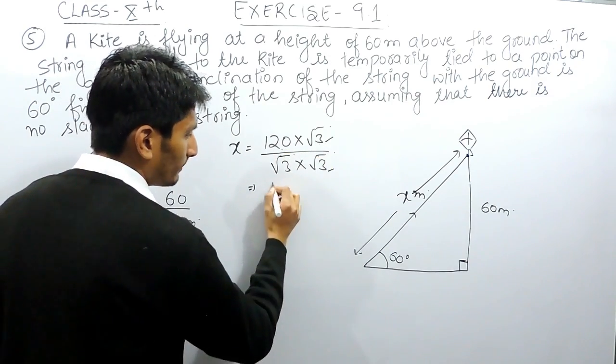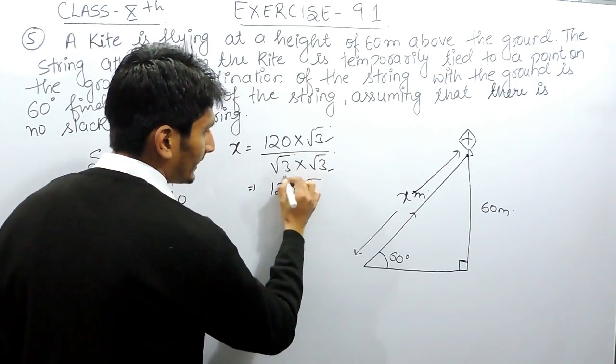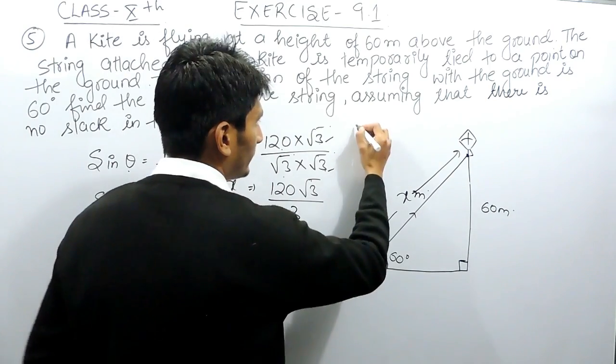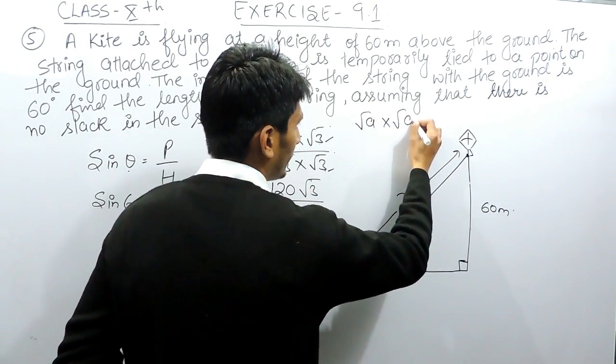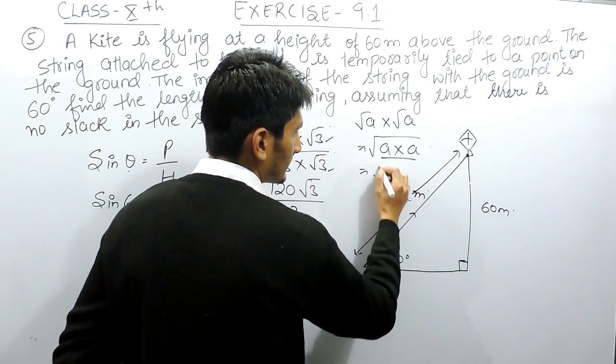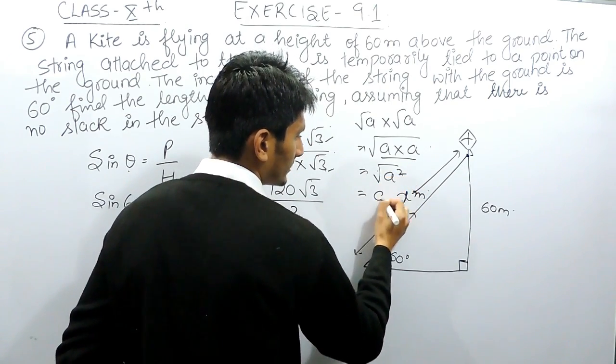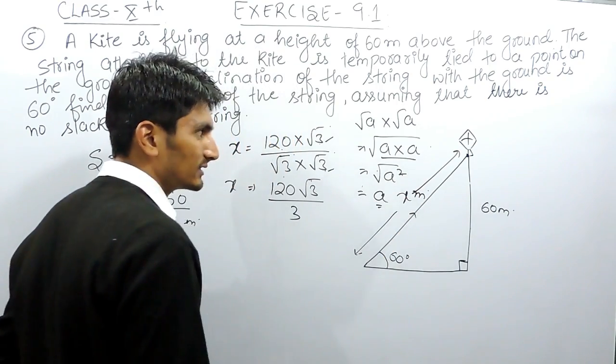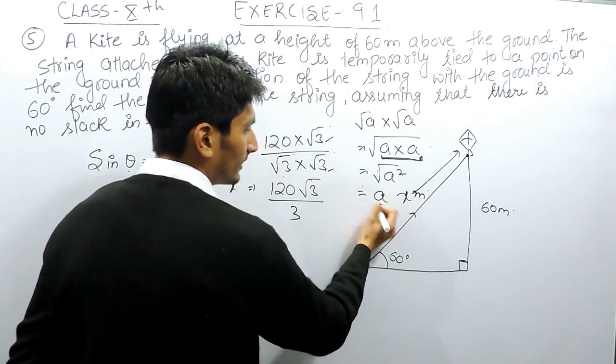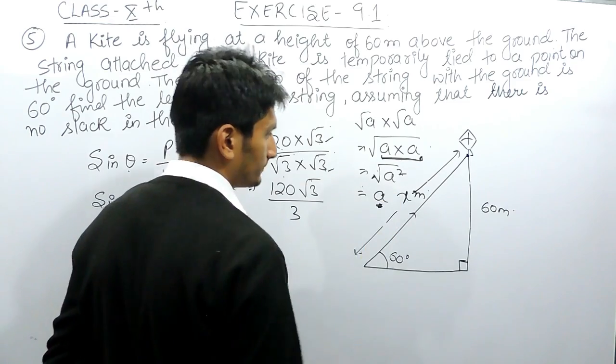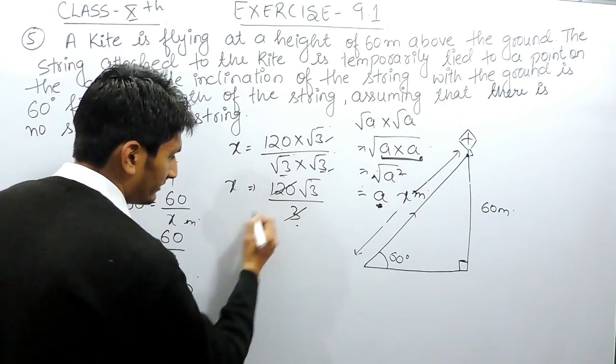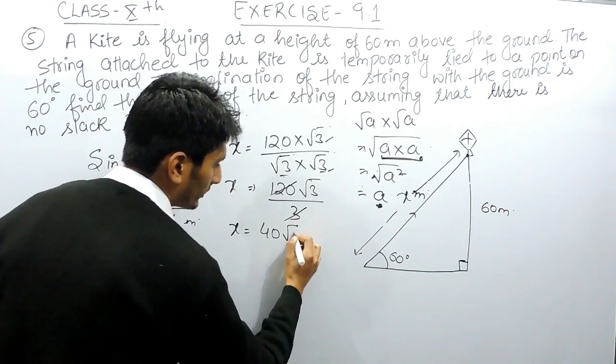This 120 multiplied by root 3 will give 120 root 3, and root 3 multiplied by root 3 will give us 3. This is because when root a is multiplied by root a, it becomes a square, and the square root cancels out. So root 3 times root 3 gives 3. This can be divided, and the answer will be 40 root 3.